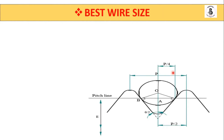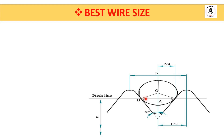In the case of measurement with the help of the best wire size method, one hardened steel wire is being used in that measurement. This is the geometry of the thread. The hardened steel wire has a small diameter d, and its outer diameter touches the flank of the thread at right angles — 90 degrees. Such a setup is called the best wire size method.